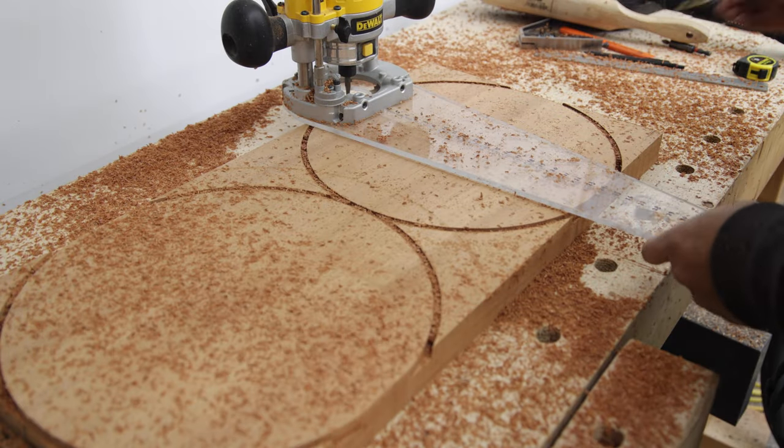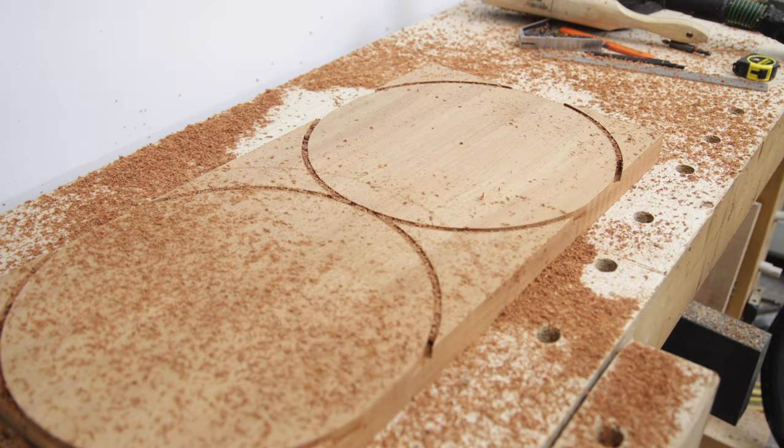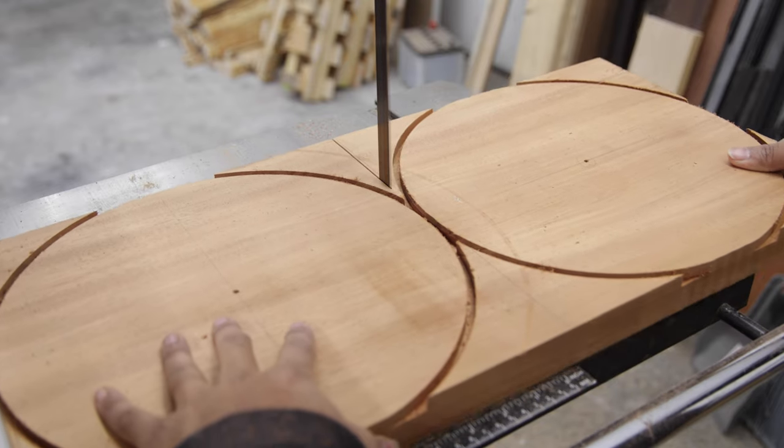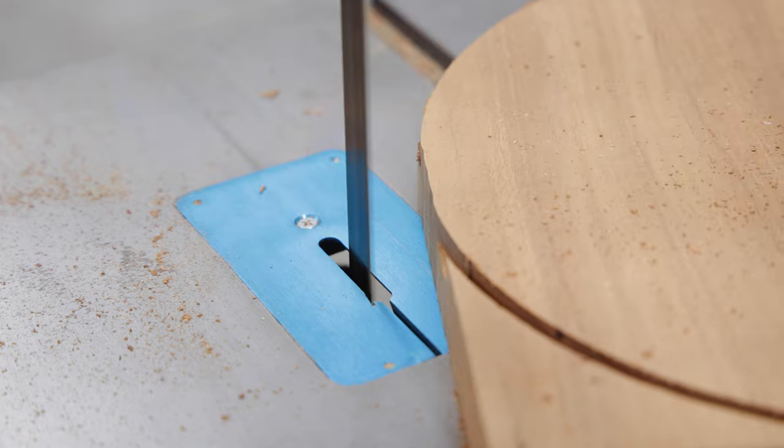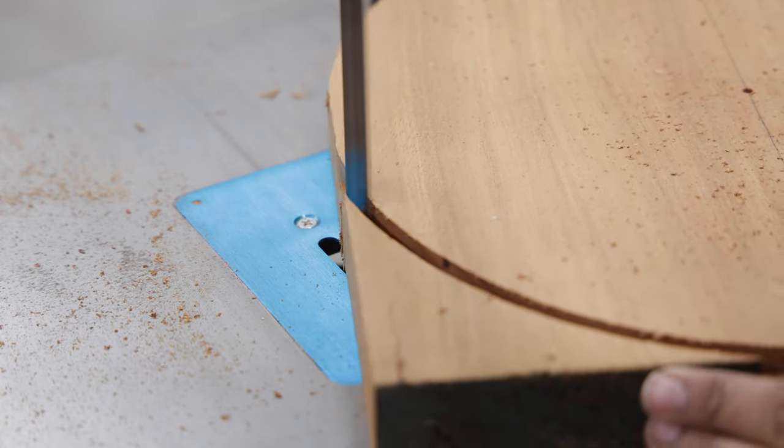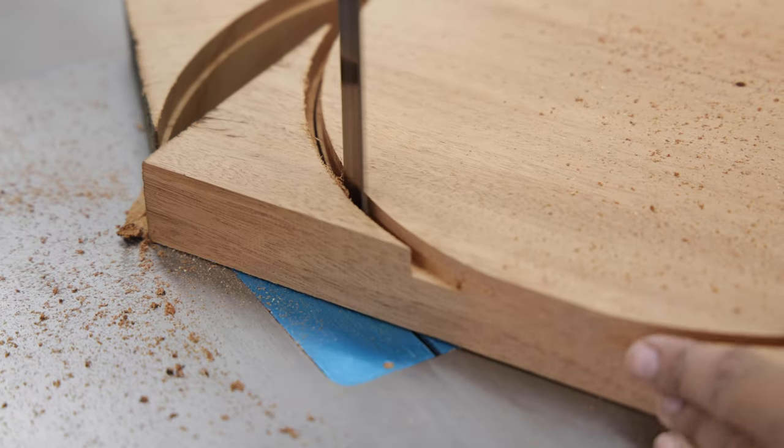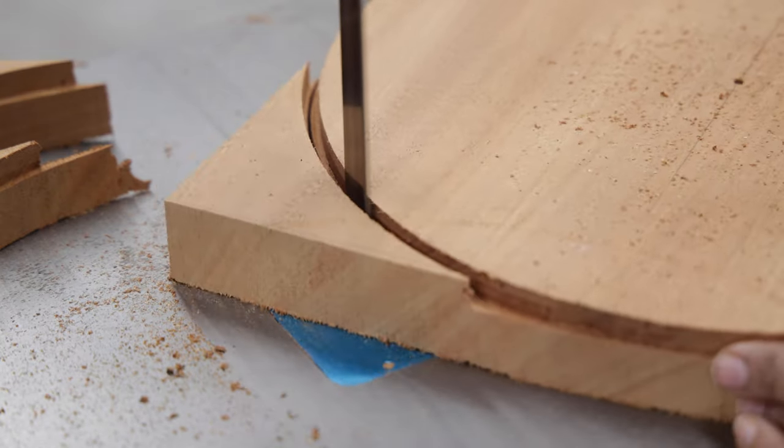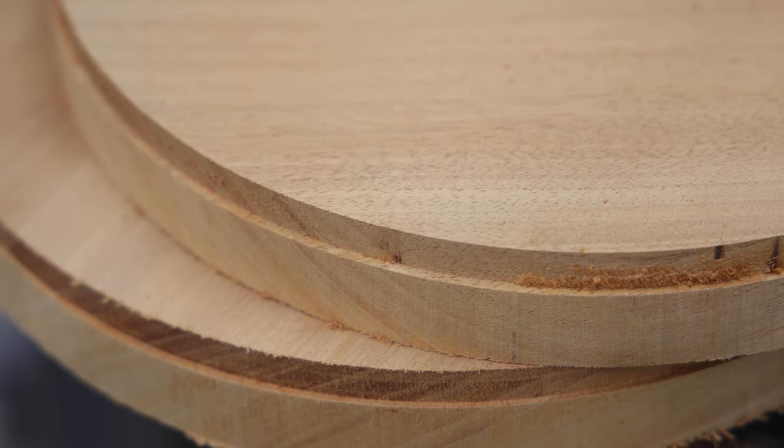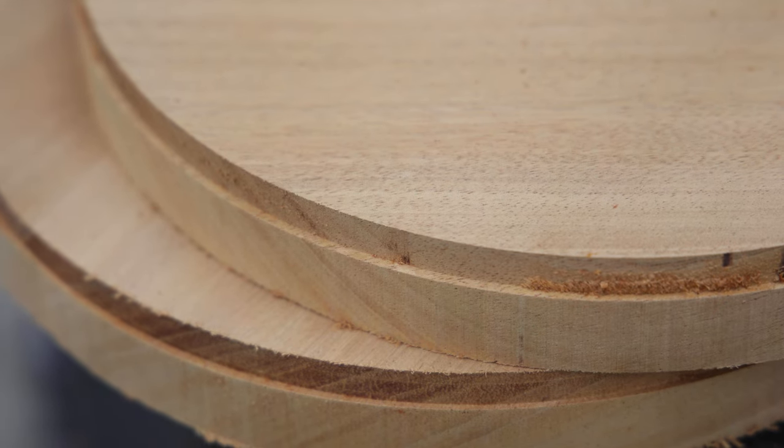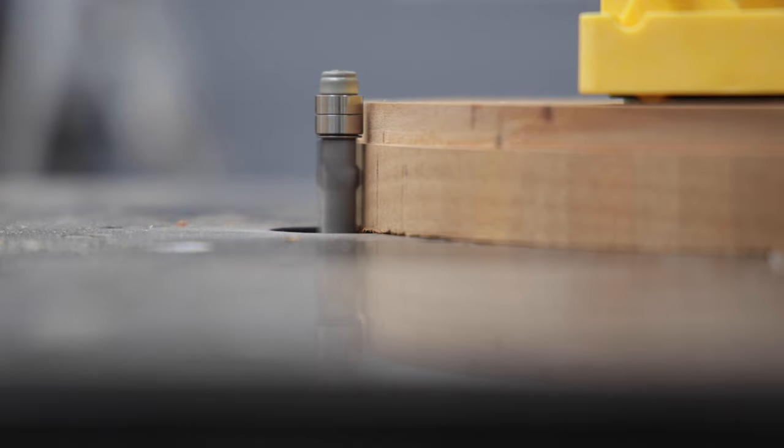Because I don't find it safe to route all the way through the material, I stopped at about 3 eighths of the way in. At the bandsaw, I separated the two tops and rough cut the circle being careful not to cut into the innermost parts. We can then use a flush trim router bit to clean up the rest of the circle.